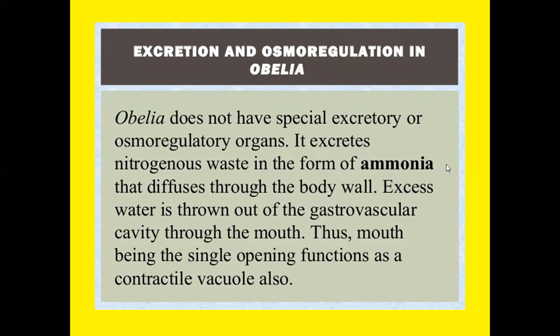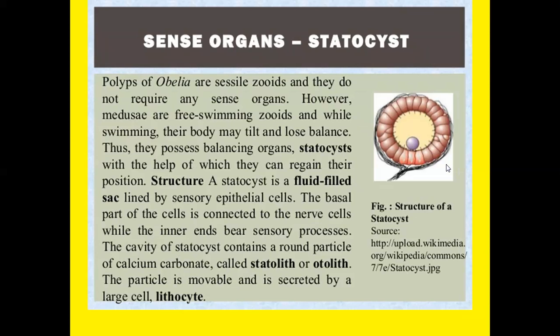Excretion and osmoregulation in Obelia: Obelia does not have special excretory or osmoregulatory organs. It excretes nitrogenous waste in the form of ammonia that diffuses through the body wall and also through the gastrovascular cavity through the mouth. Thus the mouth, being a single opening, also functions as an excretory pore.